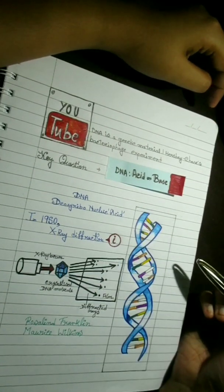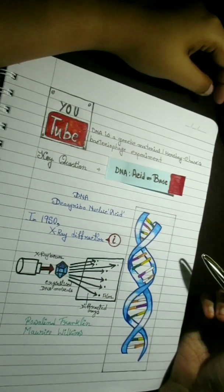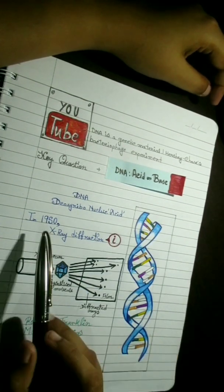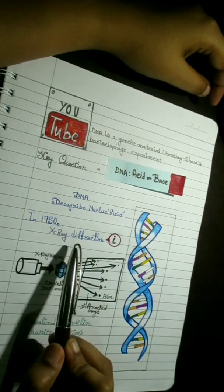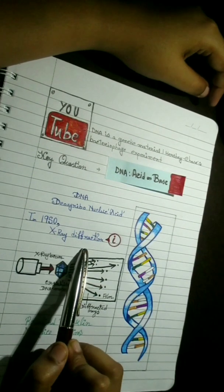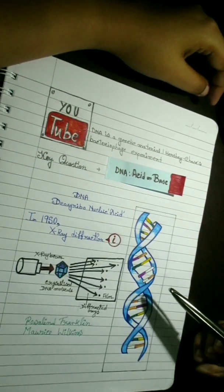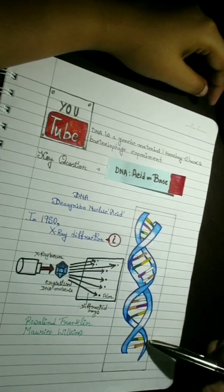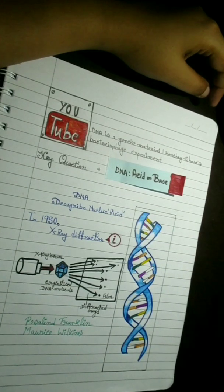Early in 1950, DNA was examined by X-ray diffraction analysis. This is a technique for determining the three-dimensional atomic structure of molecules and this experiment was conducted by Rosalind Franklin and Maurice Wilkins.